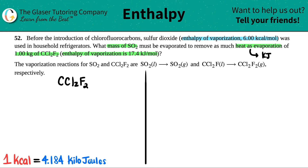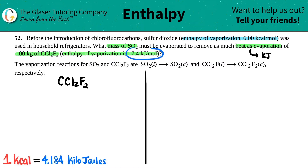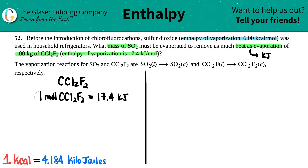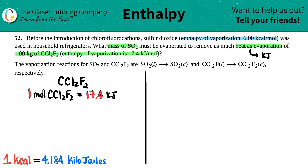They told me the enthalpy of vaporization was 17.4 kilojoules per mole. Writing this as an algebraic sentence: for every one mole of CCl2F2 that's being vaporized, I get out 17.4 kilojoules. But I don't have one mole — I have one kilogram. So the first thing I have to do is find out how many moles are in one kilogram. My roadmap: kilogram → grams → moles.